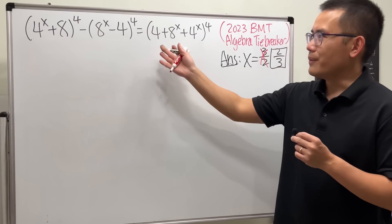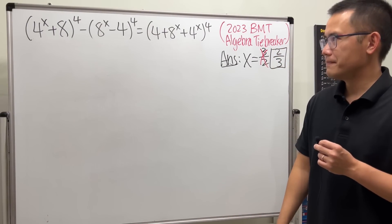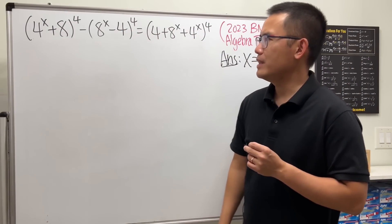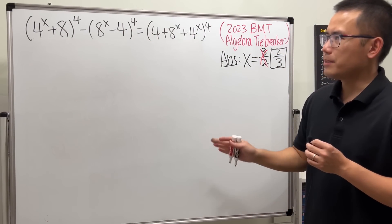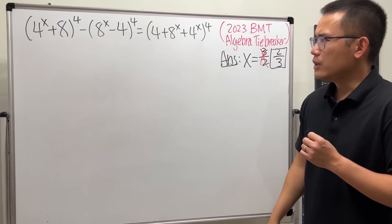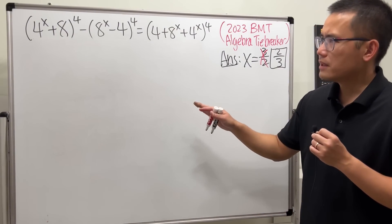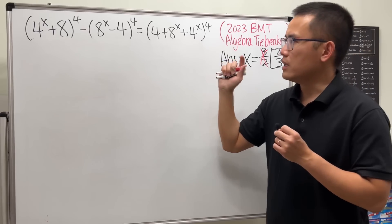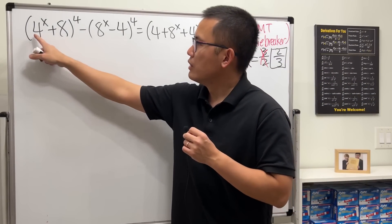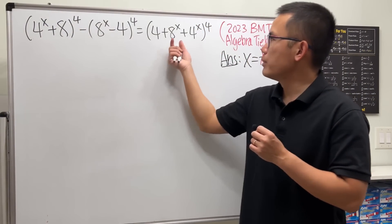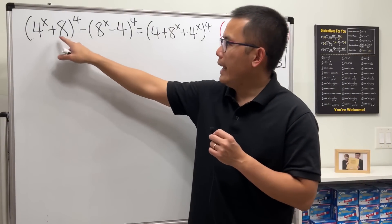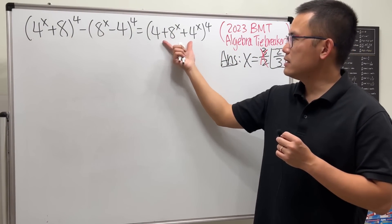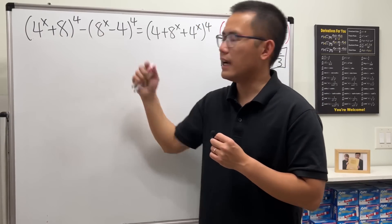If you just expand it, it will take a while. So let's take about five seconds to see if there are any similarities between each parenthesis. If we do that, you should notice 4^x and 8^x — 8 minus 4 happens to be 4, so in fact this is just the sum of those two terms.